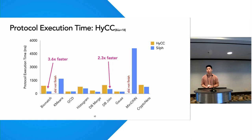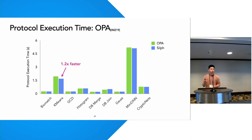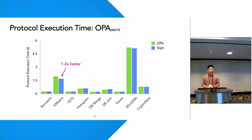SILF also outperforms HiCC in protocol execution time because our system finds better protocol assignments. For example, in the biomatch benchmark, HiCC set assignments to only use Yao's Garbled Circuits, whereas SILF uses a combination of arithmetic secret sharing and garbled circuits, resulting in up to 3.6x faster execution time. When comparing against OPA across all other benchmarks, SILF matches OPA's performance on eight of the nine benchmarks, since those benchmarks only require two primitives to reach an optimal assignment. However, SILF outperforms OPA on the K-Means benchmark because it requires three primitives for an optimal assignment. Factoring in both protocol assignment time and execution time, SILF greatly outperforms OPA end-to-end.